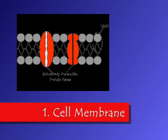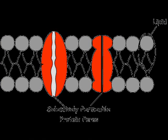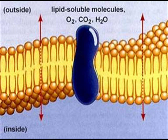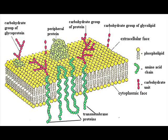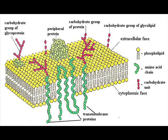A cell cannot survive if it is totally isolated from its environment. The cell membrane is a complex barrier separating every cell from its external environment. It is a fluid mosaic of proteins floating in a phospholipid bilayer. Only certain substances can pass through the lipid bilayer. Some proteins are attached to the surface of the cell membrane on both the internal and external surface — these may be hormone receptors, enzymes, or cell recognition proteins.